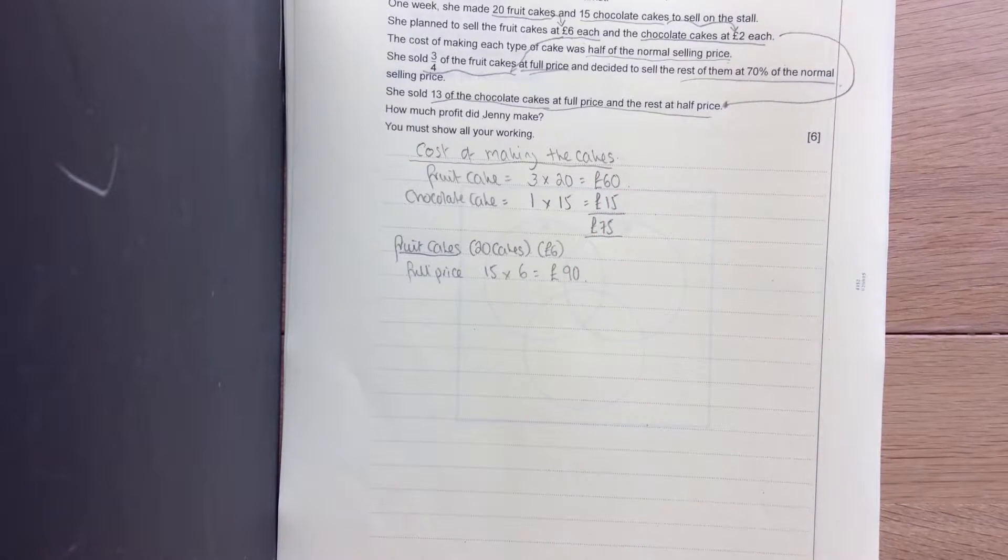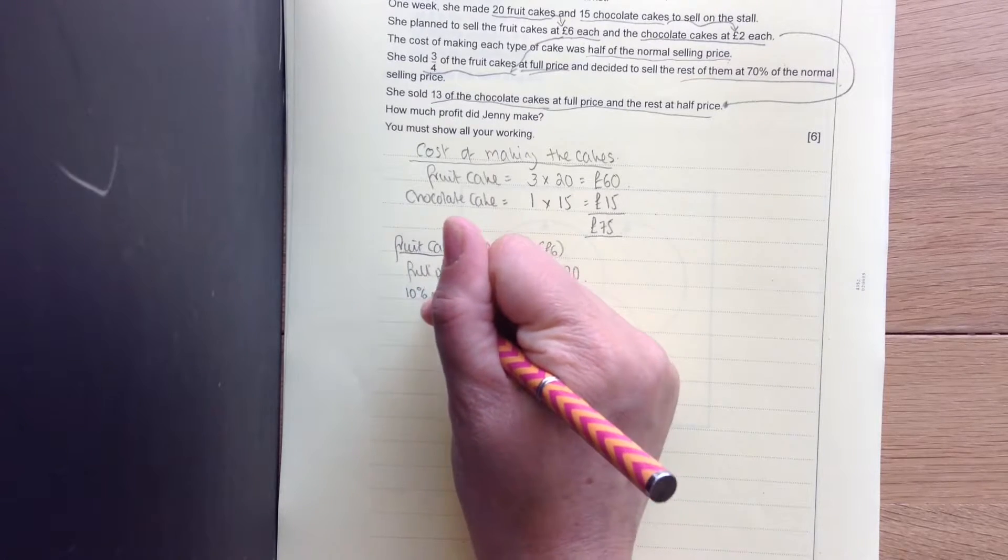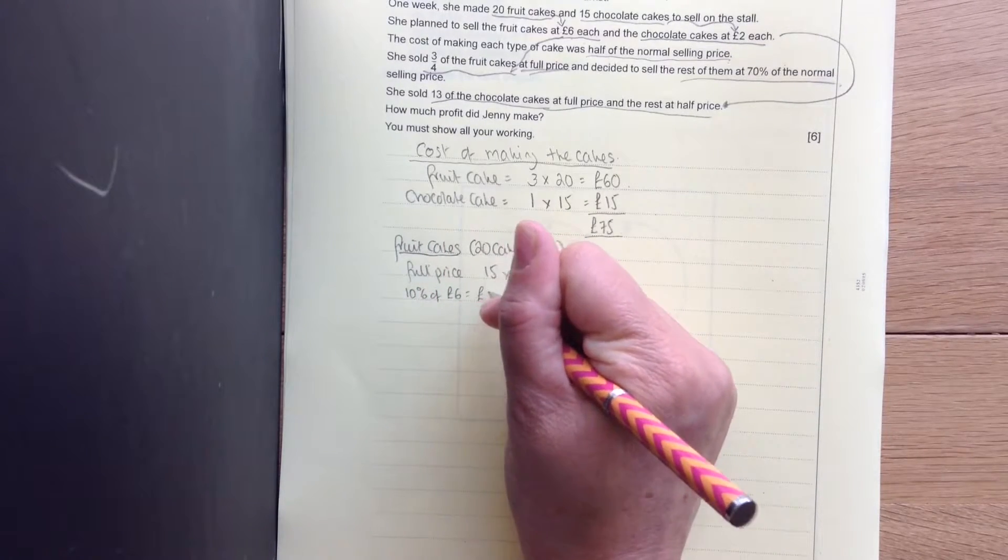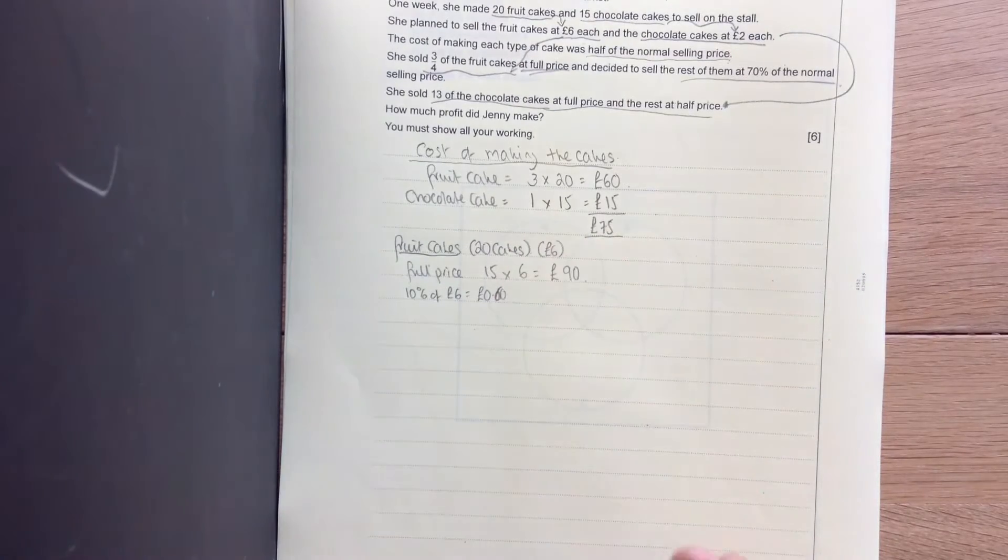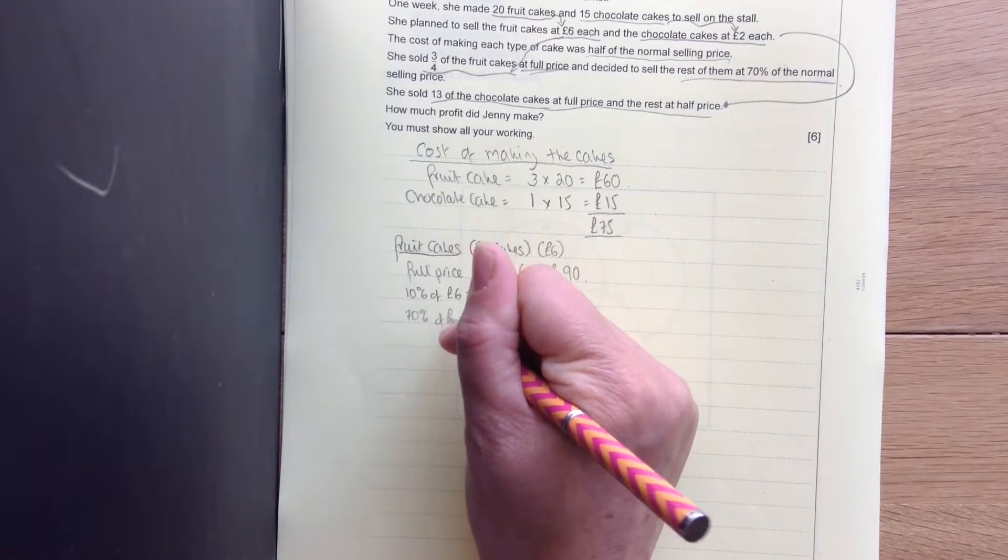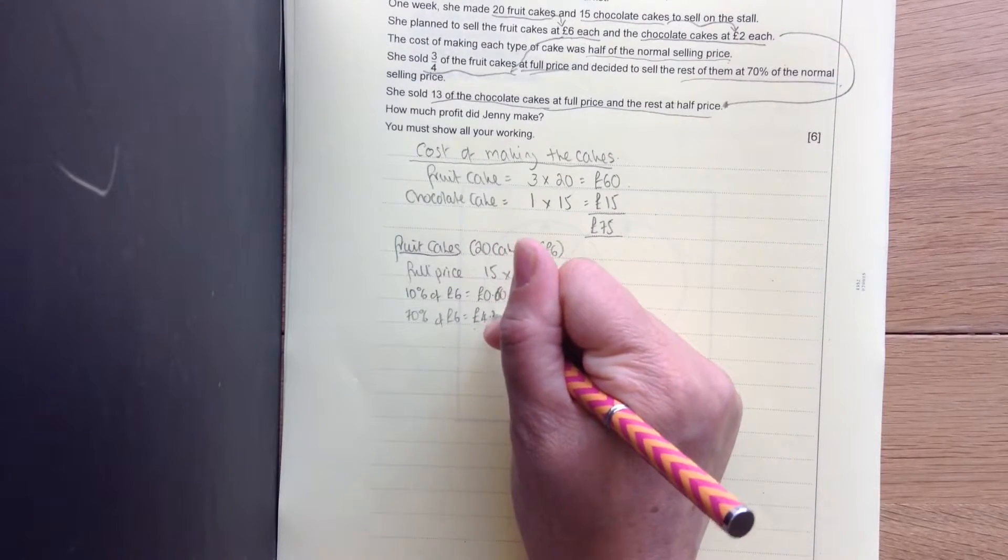I decided to sell the rest of them at 70% of the normal price. So the normal price was £6 and we need to find 70%. So 10% of £6 is £0.60. So that's £4.20.